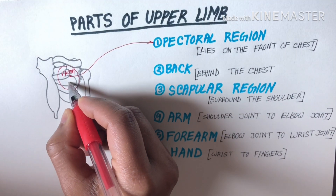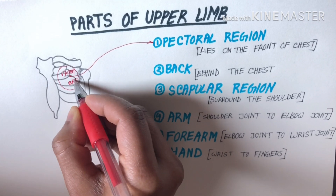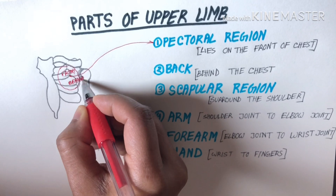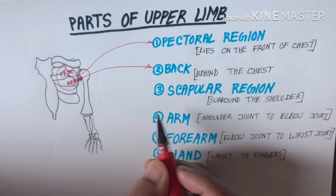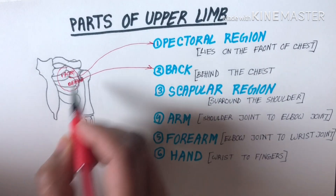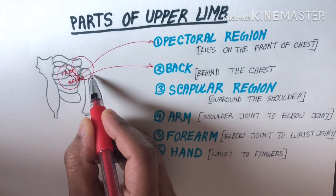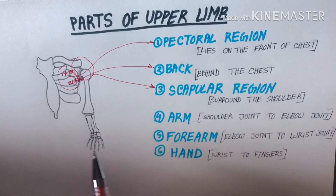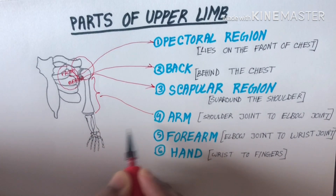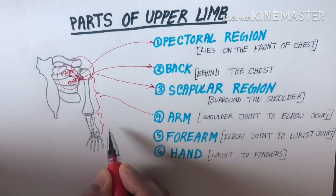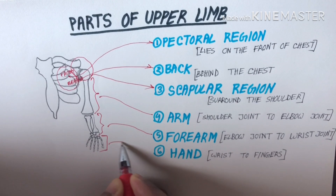Behind the chest we have the back region — behind the chest is called the back. Then surrounding the shoulder is the scapular region. Then this is the arm, from shoulder to elbow, then the forearm, then the hand.